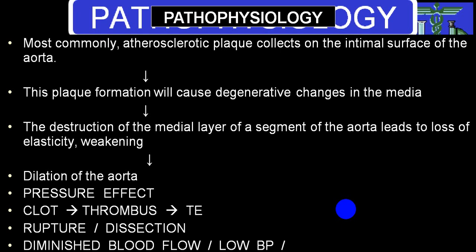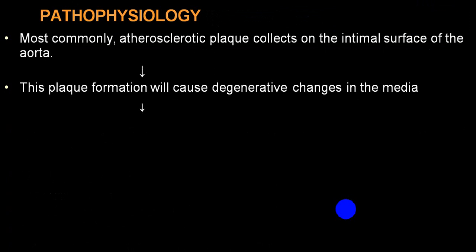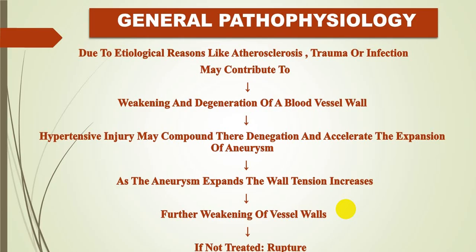Secondary to diminished blood flow, any artery arising from the aneurysmal part will have decreased blood flow — producing low volume pulse, diminished blood pressure, and even claudication in the distal territory. The sequence is: weakening and degeneration of the vessel wall, aneurysm formation, expansion, and later rupture.